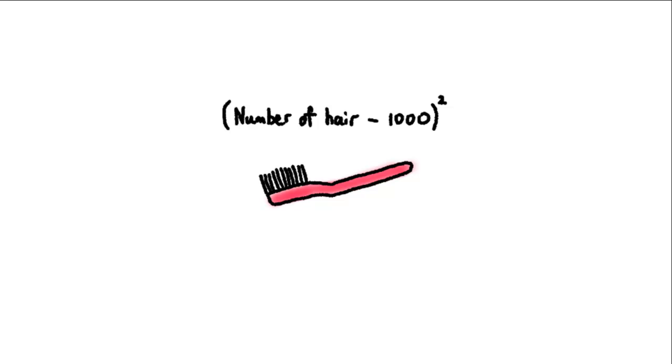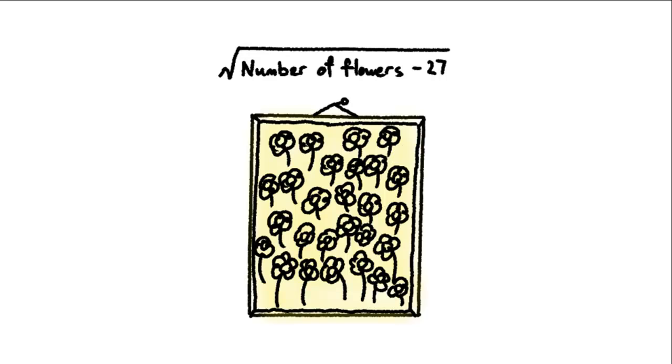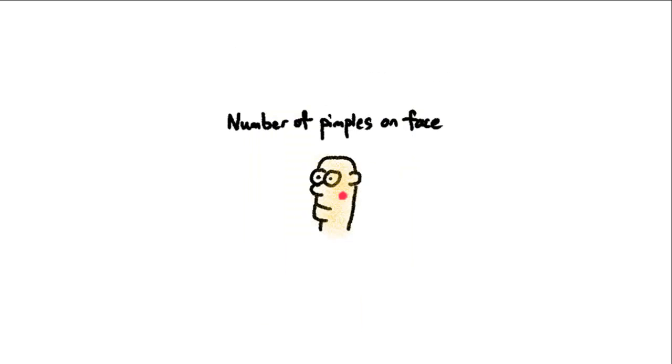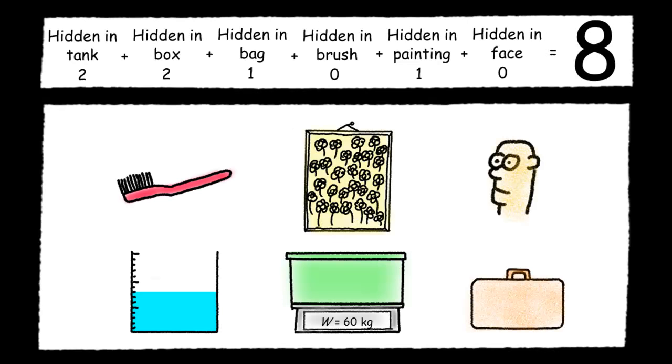And the next time we don't get 8, we realize besides tanks and boxes, gold bars can also be hidden in all kinds of obscure places and unimaginable ways. Toothbrushes, paintings, and even on our faces.